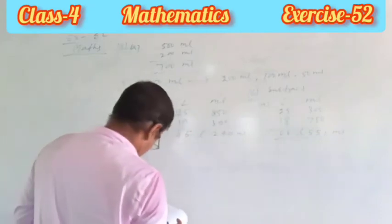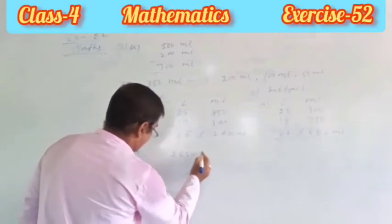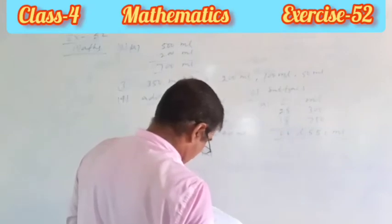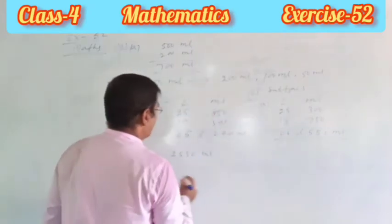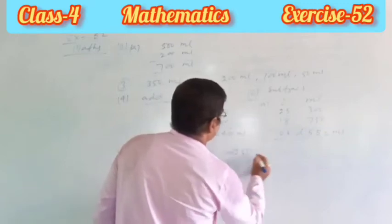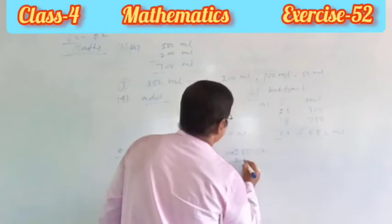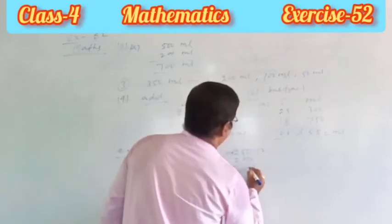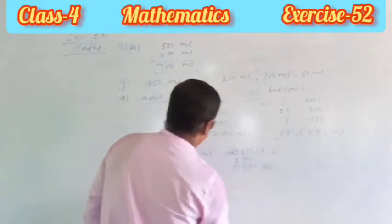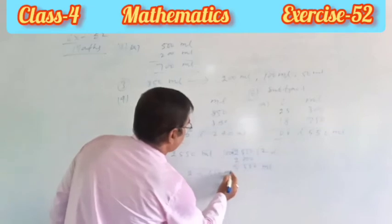You have 2055 milliliters of water. How many liters? In this way you divide: two times one thousand is 2000. The answer is 2 liters and 55 ml.